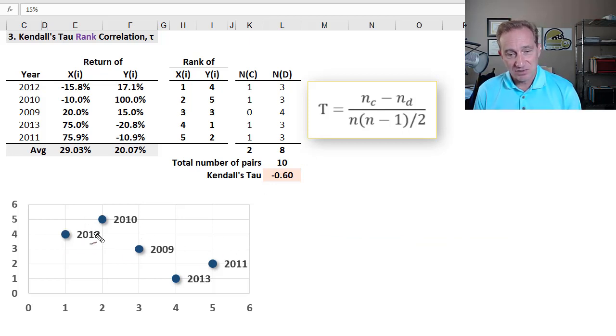So we're going to need to account for 10 pairs, but I'm just going to start here on the left. If I start here with this dot, notice I have one pair here, a pair here, a pair here, and a pair here. So just starting with 2012, that's one, two, three, four pairs as I go to the other four points.